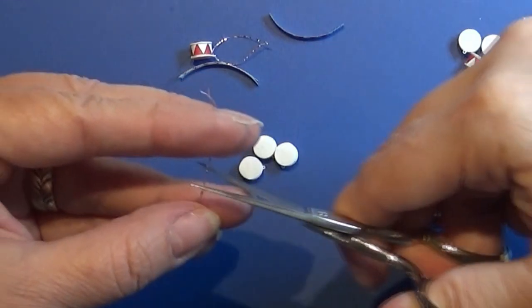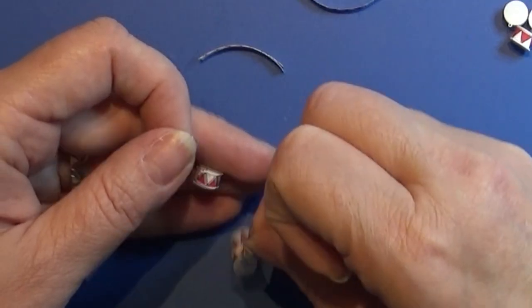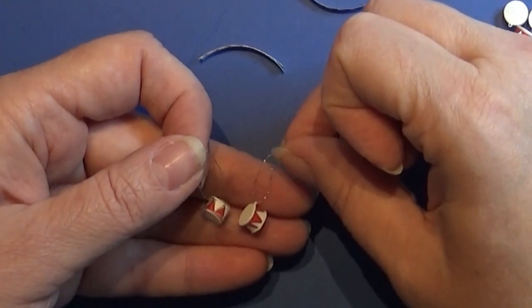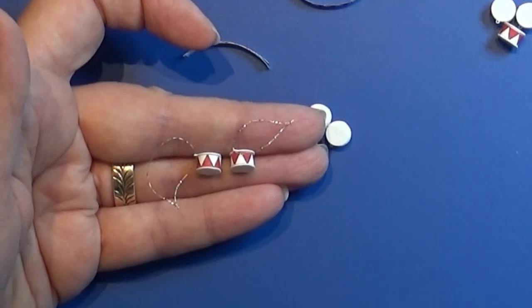Cut off the excess thread and then you're done with the little Christmas drum. Make as many as you like and that's it. I hope you like this tutorial and happy crafting!